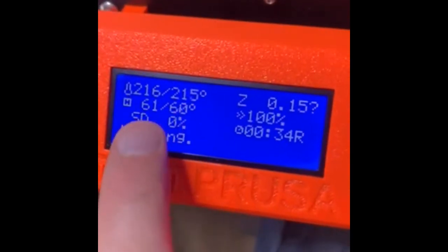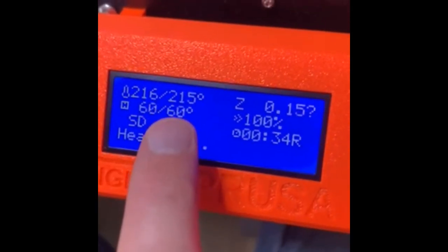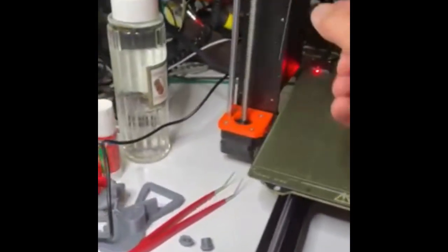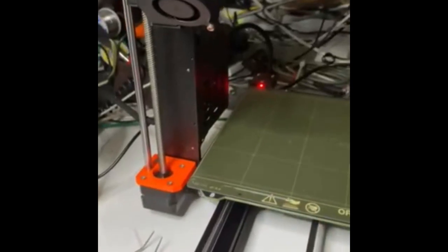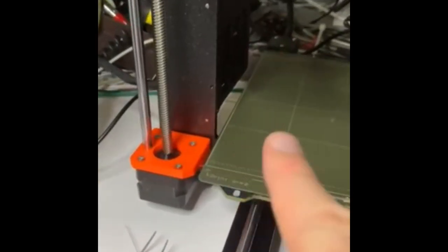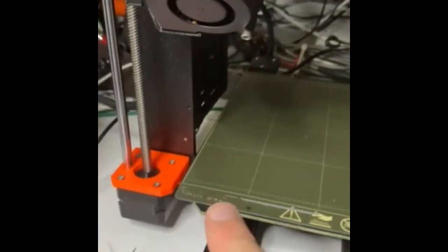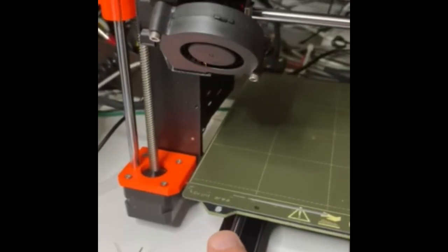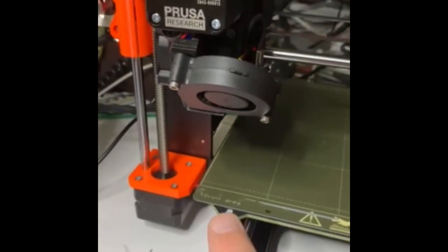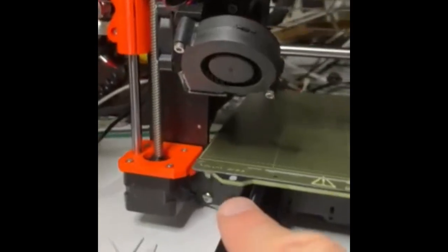Look, the temperatures are reached. See, 60 wanted. Look, there it goes. A long thread comes out. Then I'll step away. Then it's going to calibrate first. It will be a long film, but it's nice.